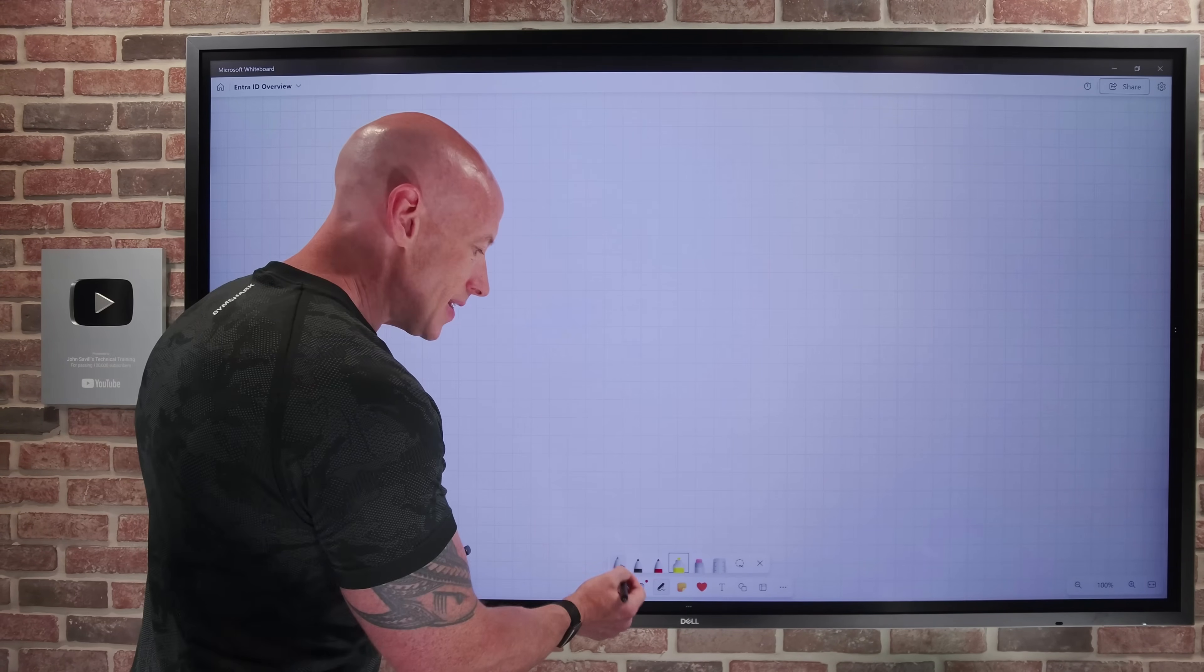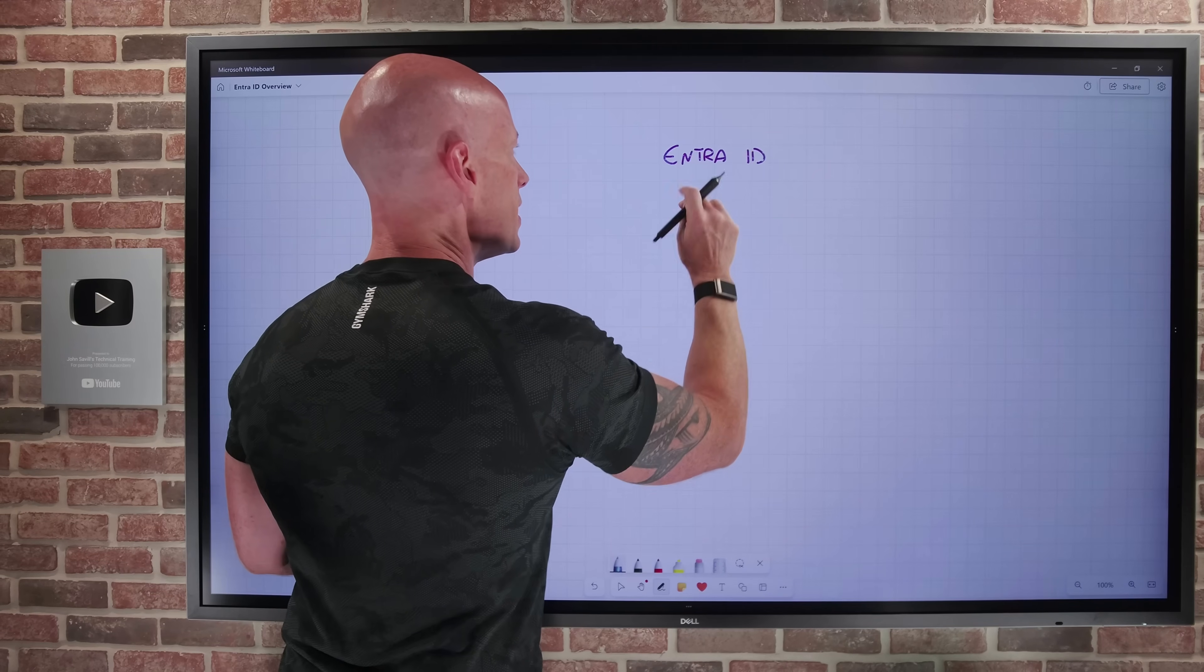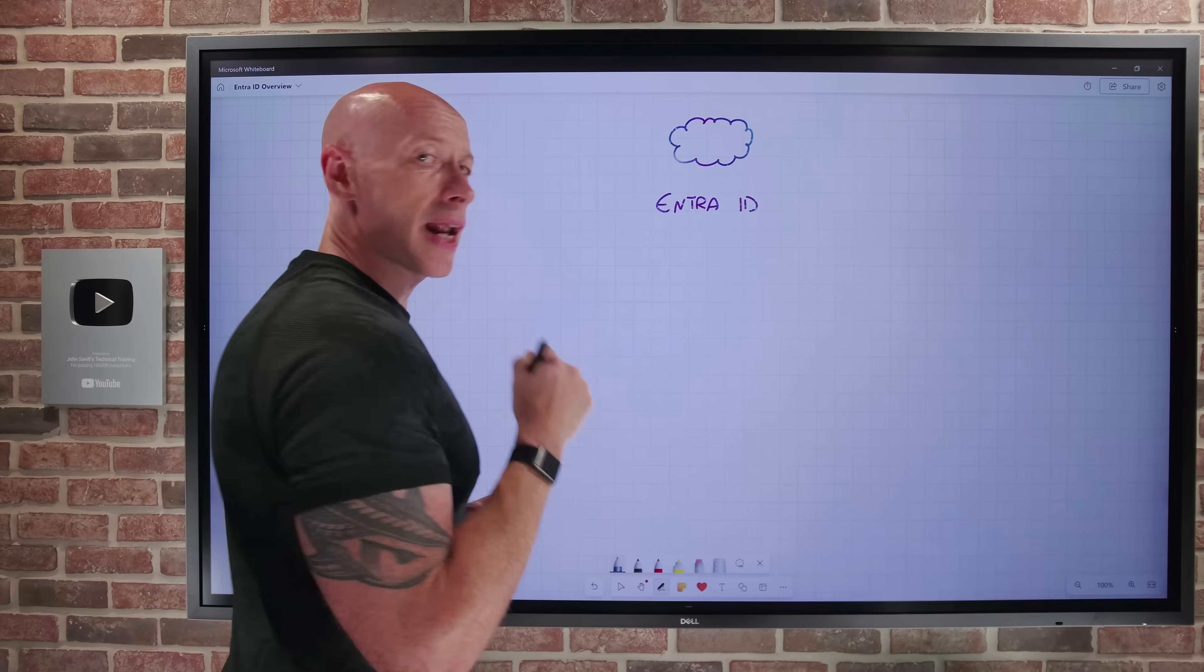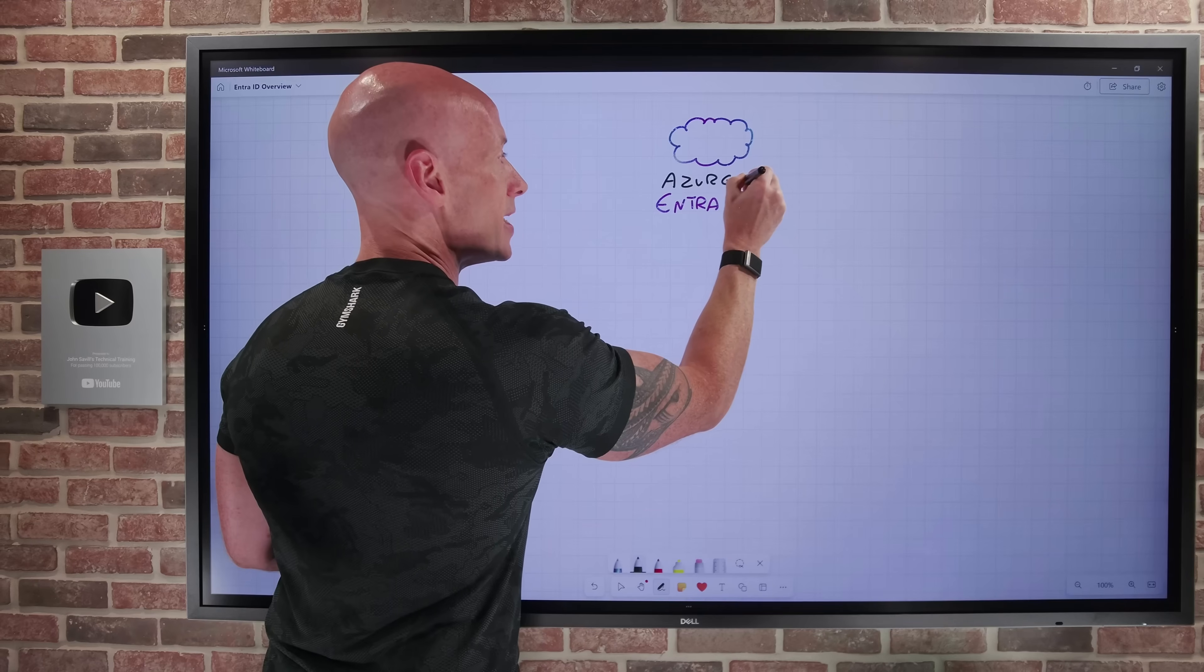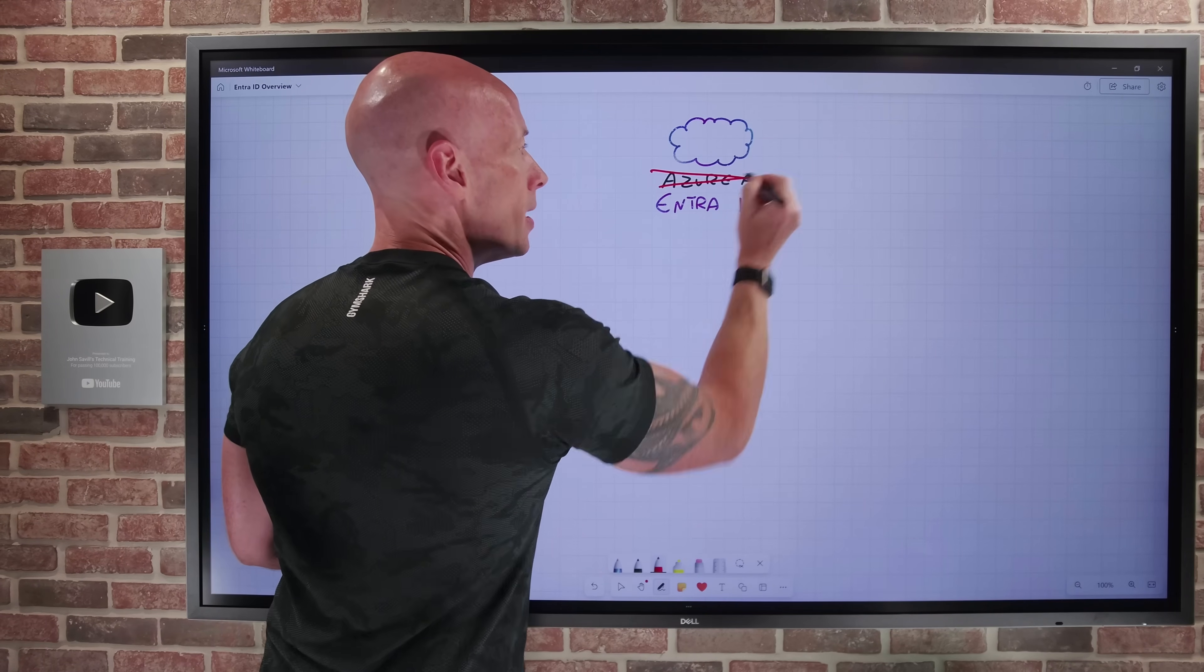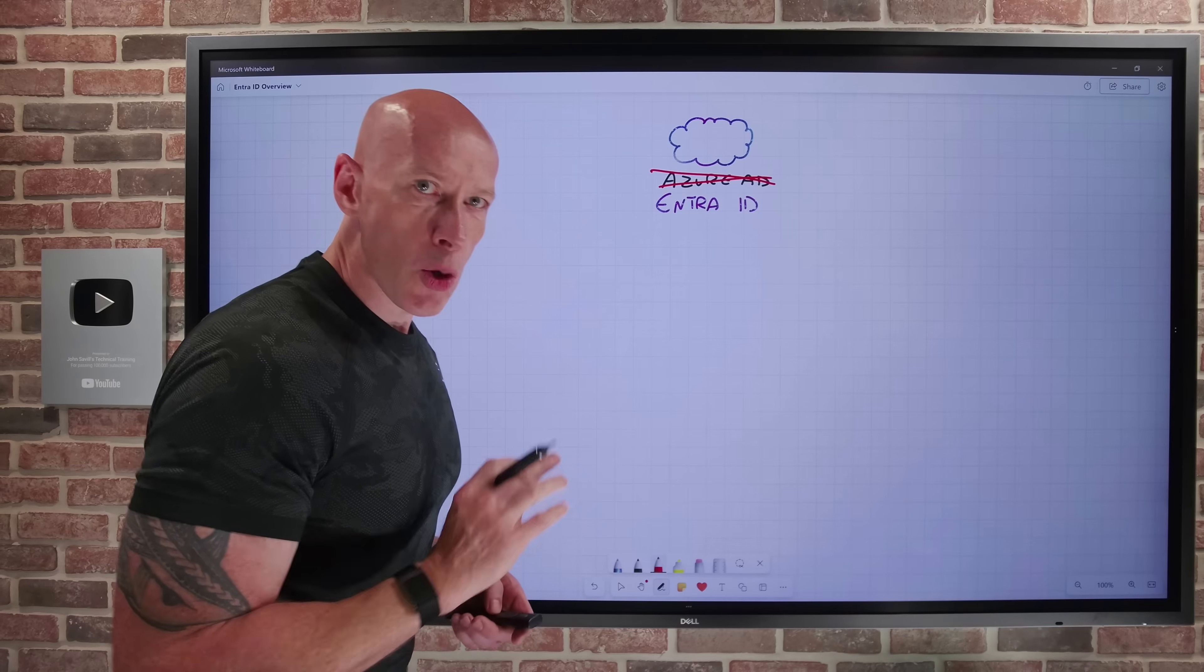When I think about Entra ID, it was born in the cloud. So I've got my Entra ID, and it was designed for the various cloud scenarios we have. Now yes, it used to be called Azure AD, but that was a terrible, terrible name because it was not part of Azure, nor was it really related to the on-premises Active Directory. So we won't talk about that again.